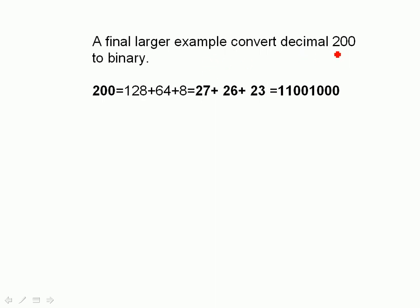And another example, we're going to do decimal 200. Decimal 200 is 128 plus 64 plus 8, which is equal to 2 to the power 7, 2 to the power 6, and 2 to the power 3. So that's 11001000 in binary.